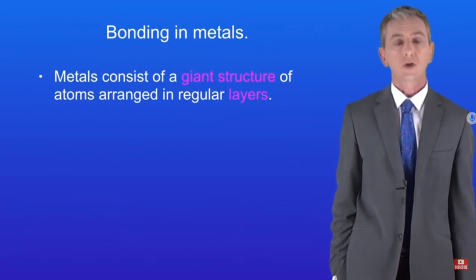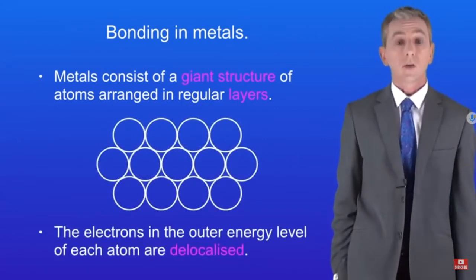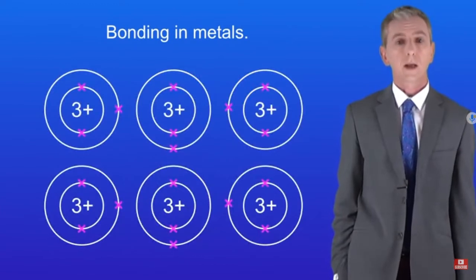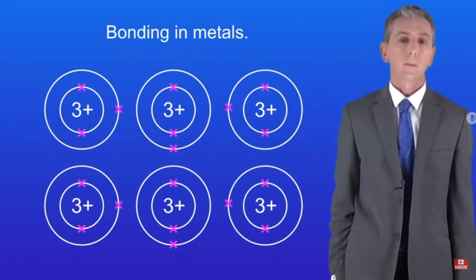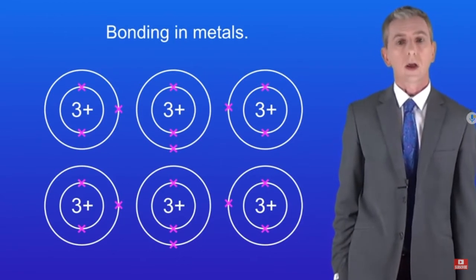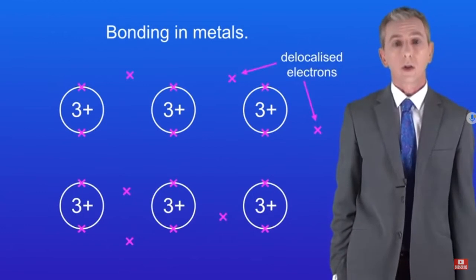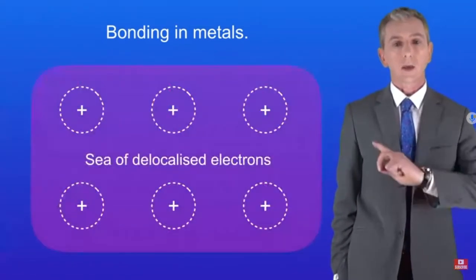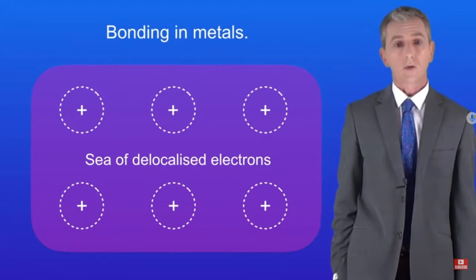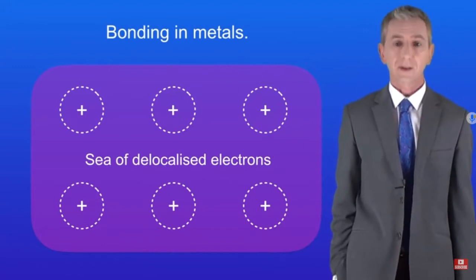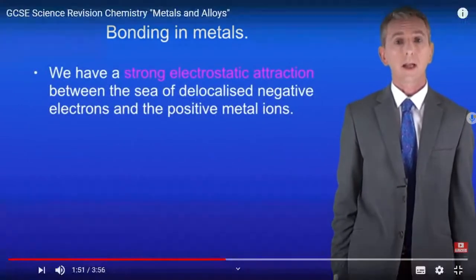Metals consist of a giant structure of atoms arranged in regular layers. In a metal, the electrons in the outer energy level of each atom are delocalized. Here I'm showing you atoms of the metal lithium - lithium atoms have three protons in their nucleus and three electrons in their energy levels. The key fact is that in metals the outer electrons are not attached to any individual atom, so they're free to move. Scientists call these delocalized electrons, and scientists call this a sea of delocalized electrons. Because each metal atom has lost its outer electrons we now refer to them as metal ions, but remember this is not ionic bonding - this is metallic bonding.